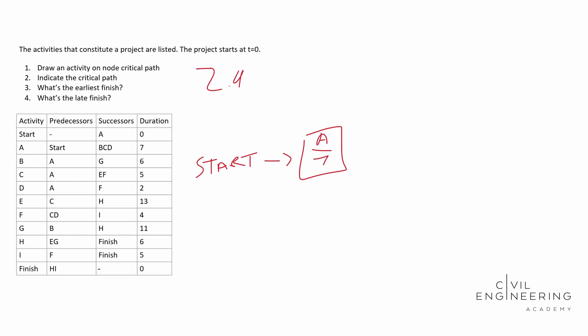So now we have to do something called early start, early finish, late start, late finish. Early start for A is going to be on day zero, right? That's the earliest that it can start. The earliest it can finish is on day seven. And this will make sense here in a minute, because it's seven days long. That's how long it's going to take activity A to complete. We're not even going to worry about late yet. That's for our backwards pass.